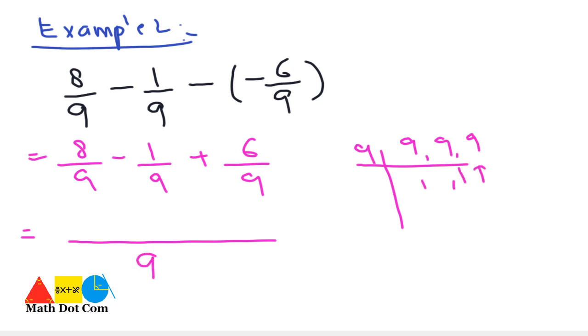Then you will just subtract the numerator from each other as 8 minus 1 plus 6. This plus is just because we have already subtracted it here. So simplify it as 8 minus 1 is 7 and 7 plus 6 is 13 and 13 over 9. So this is the method you can use for subtracting the rational numbers, for subtracting 2 or 3 rational numbers.